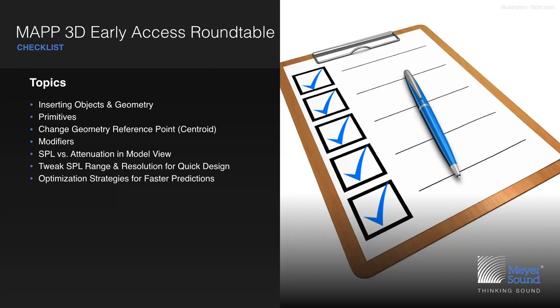Today's topics include: how do I insert objects and geometry — objects such as microphones and loudspeakers; the primitives, which are your 2D shapes and 3D solids; how do I change the centroid or reference point within a given primitive; how do I modify geometry using Boolean operations such as union, subtract, and intersect; the new SPL feature; SPL attenuation rules of engagement; and how to tweak SPL range and resolution settings for quick design and optimization.